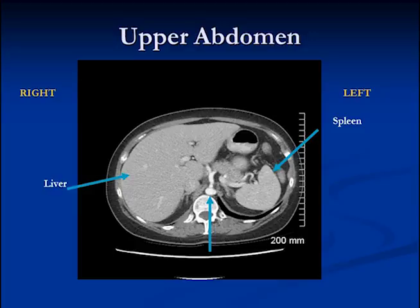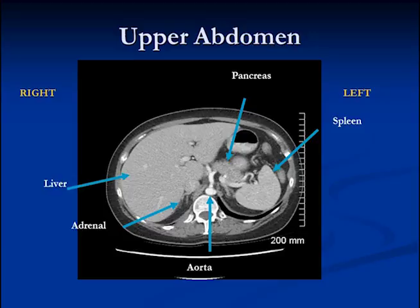Other images we'll see in the upper abdomen include the aorta. These little triangular-shaped hats are the adrenal glands, one on each side. This is part of the pancreas sitting here in the center — it has a sort of fluffy texture with more fat in it than many other structures. These are vessels going around the pancreas, including the splenic vein, which sits on top of the pancreas. This is the air bubble in the stomach, and we get a little bit of lung coming in here as well.